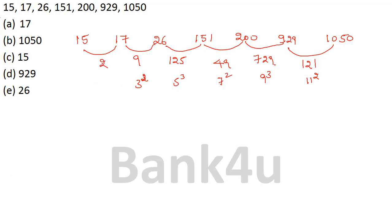The pattern is: square, cube, square, cube, square — so the first difference should be a cube. The odd numbers are 11, 9, 7, 5, 3, 1. So 1 cubed is 1. Therefore 17 minus 1 should be 16, but it is 15 here. So 15 is wrong; the answer is option C.